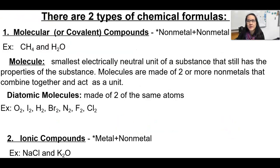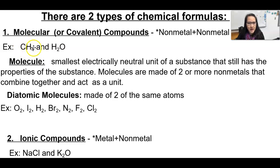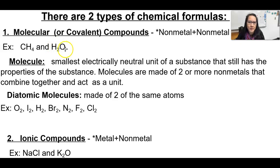There are two types of chemical formulas. One is molecular, also known as covalent compounds, which is non-metals attached to other non-metals. For example, CH4 — carbon is a non-metal, hydrogen is a non-metal, and this would be a carbon with four hydrogens surrounding it. And H2O, commonly known as water, has oxygen with two hydrogens connected to it. All of these are non-metals, therefore these are covalent compounds.